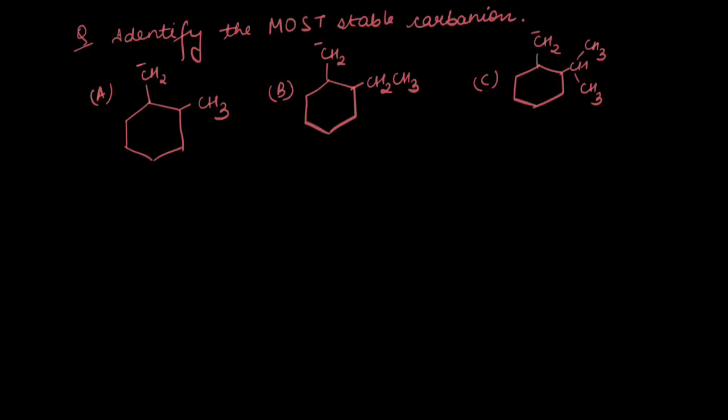Let's move on to the next question. Here, we need to identify the most stable carbanion. Let's recall what we know about the carbanion — it is a reaction intermediate which is negatively charged. There are eight electrons present around the carbon atom, so it is electron-sufficient, and it has a negative charge, making it an electron-rich species.